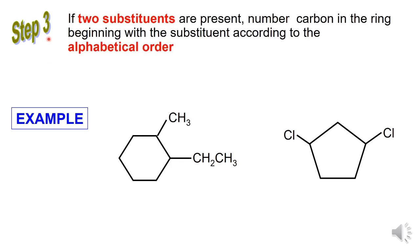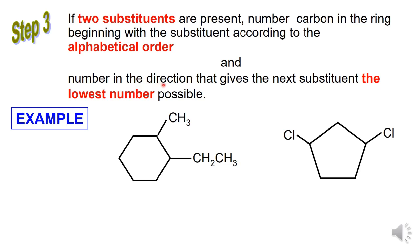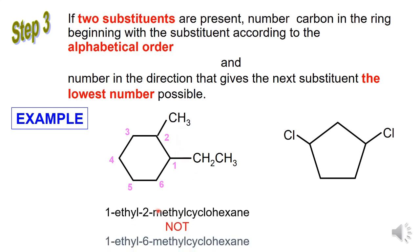Step 3: If two substituents are present, number the carbons in the ring beginning with the substituent according to alphabetical order, and number in the direction that gives the next substituent the lowest number possible. Example 1: the parent name is cyclohexane. Start numbering from the CH2CH3 substituent group, and give the lower number to the next substituent group. So the correct IUPAC name is 1-ethyl-2-methylcyclohexane, not 1-ethyl-6-methylcyclohexane.